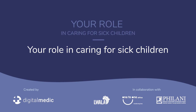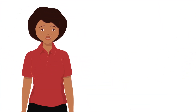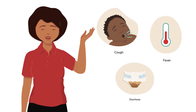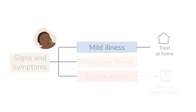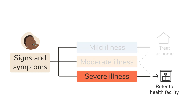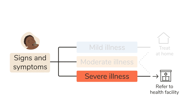Young children often get sick and show signs and symptoms of common childhood illnesses like a cough, a fever, or diarrhoea. Sometimes these are due to mild illnesses, but sometimes the illness can become very severe, especially if the child is weak from poor nutrition, and then the child needs urgent medical care.